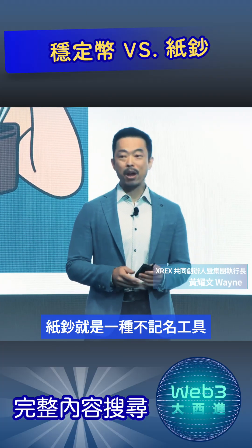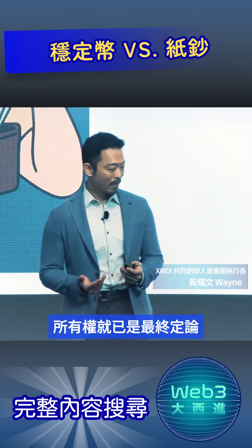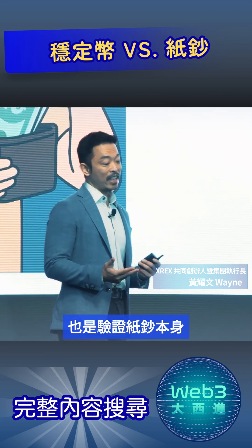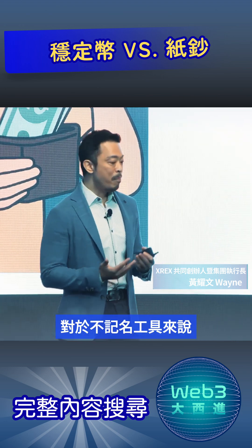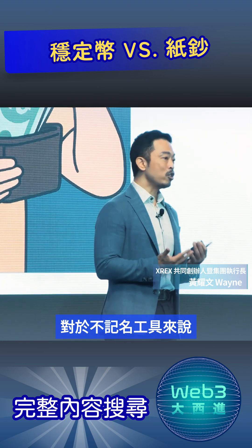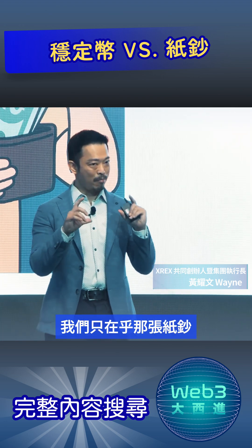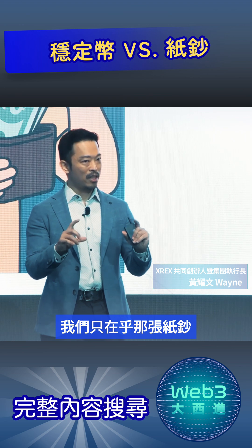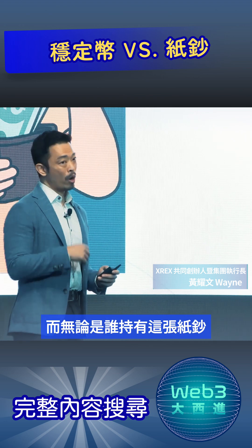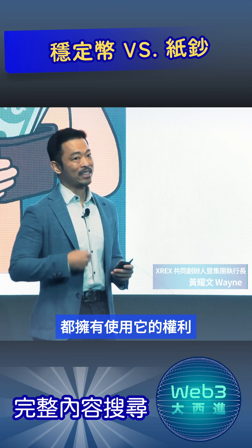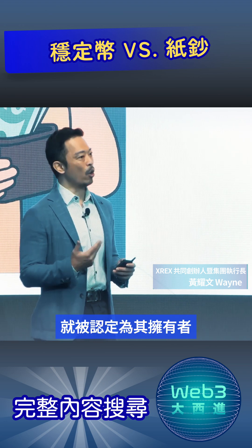The paper bill is a bearer instrument. Possession is finality. Verification is against the bill, not the holder. So with a bearer instrument, we don't care who the holder is. Anybody can hold it. We just care if that bill is genuine and has value. And whoever is in possession of that bill has the right to spend it and is the owner of it.